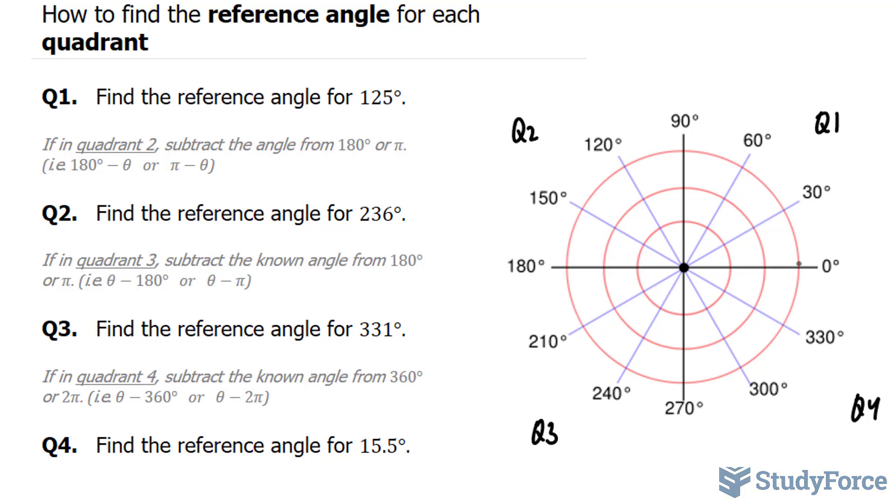In question 1, they ask, find the reference angle for 125°. So our angle exceeds 90 degrees and it's within this quadrant, quadrant 2. Whenever you have an angle in quadrant 2, you either have to subtract that angle from 180 degrees or pi.